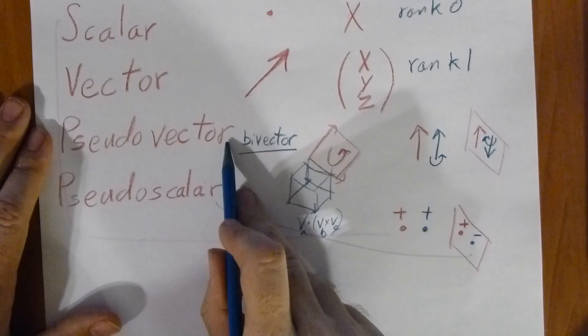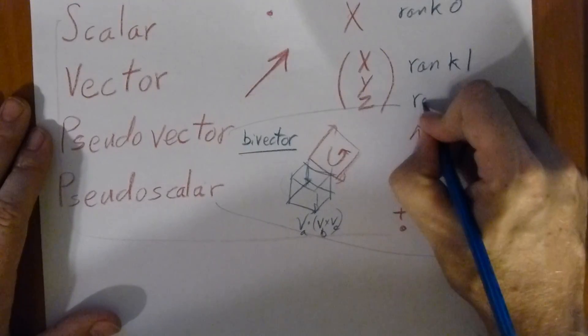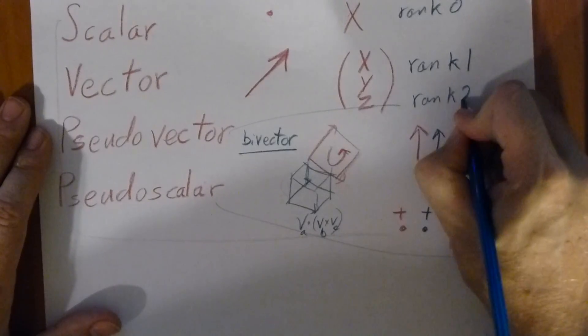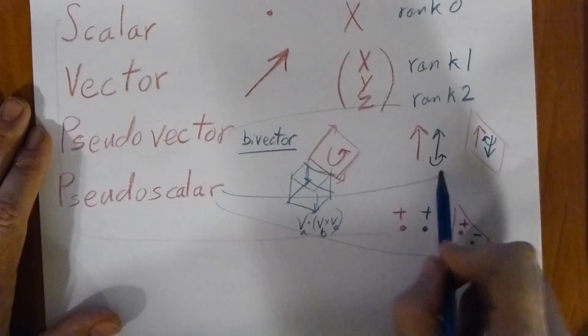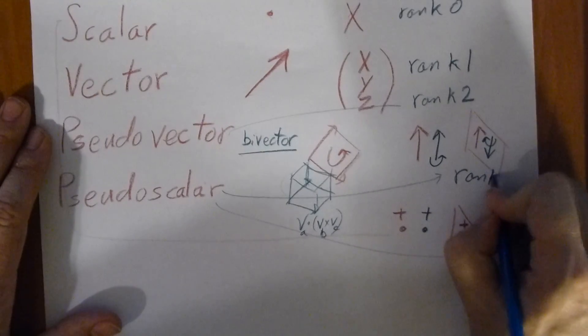Pseudovector is rank two, pseudoscalar is rank three.